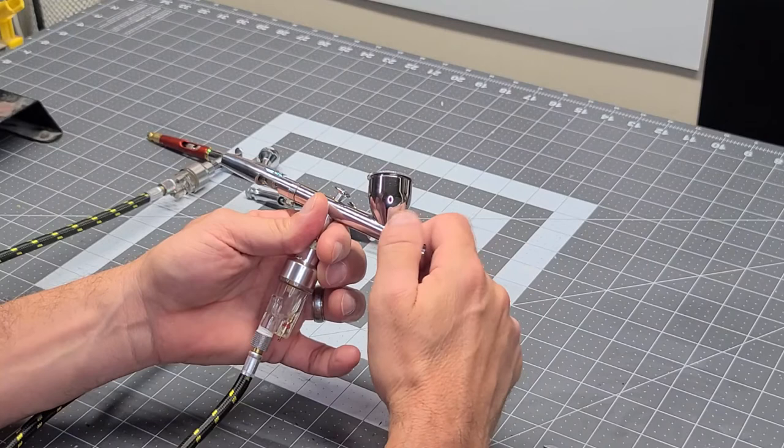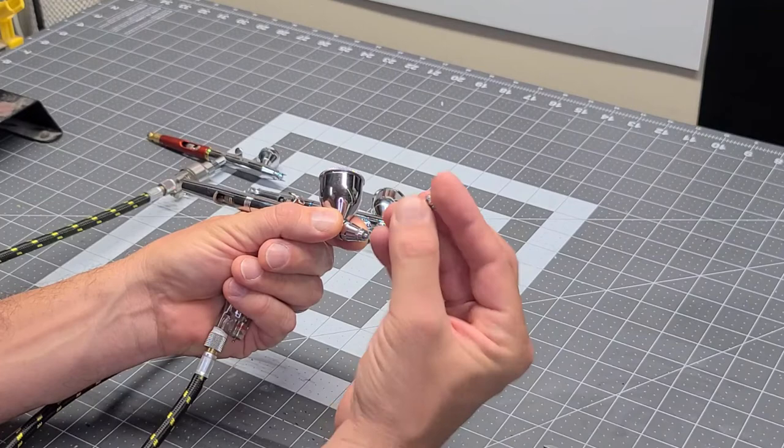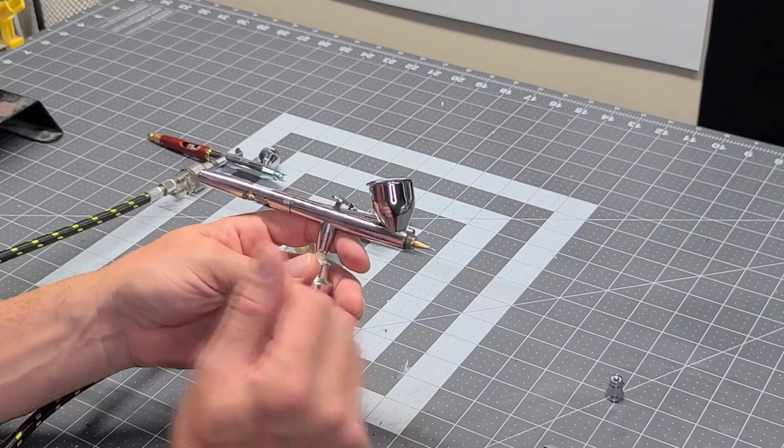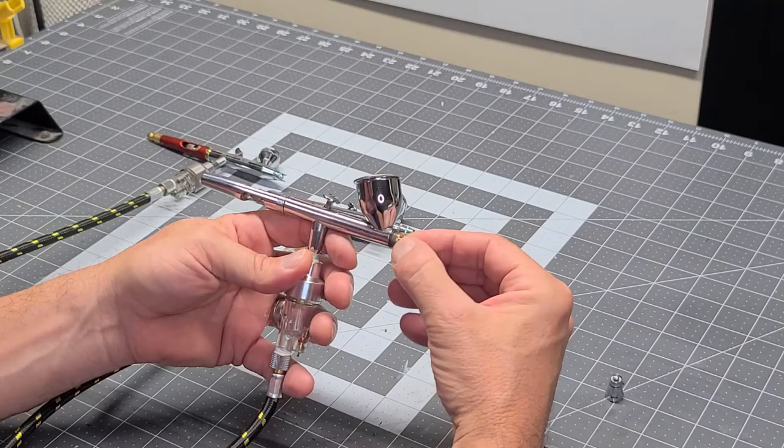They all come with a needle cap. Any airbrush from cheap to expensive should come with a needle cap, and then your nozzle cap. One of the features I actually do like about the Eclipse after seeing a whole bunch of different guns - I really do like their nozzle.